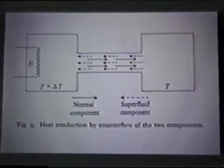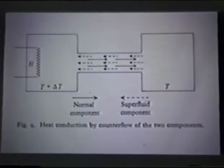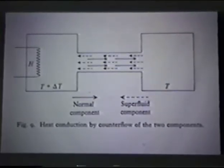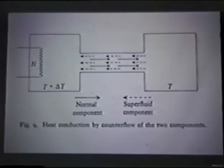This shows how you can have a counterflow of normal and superfluid flow. If you have a temperature gradient, the thermal excitations, the high frequency sound waves, will tend to drift down from high temperature to low temperature. That could be compensated by a superfluid flow in the opposite direction. So the superfluid has very high thermal conductivity.